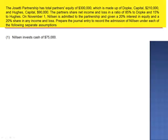Exercise 8. The Jossetti partnership has total partners' equity of $300,000, which is made up of Dopke capital $210,000 and Hughes capital $90,000.